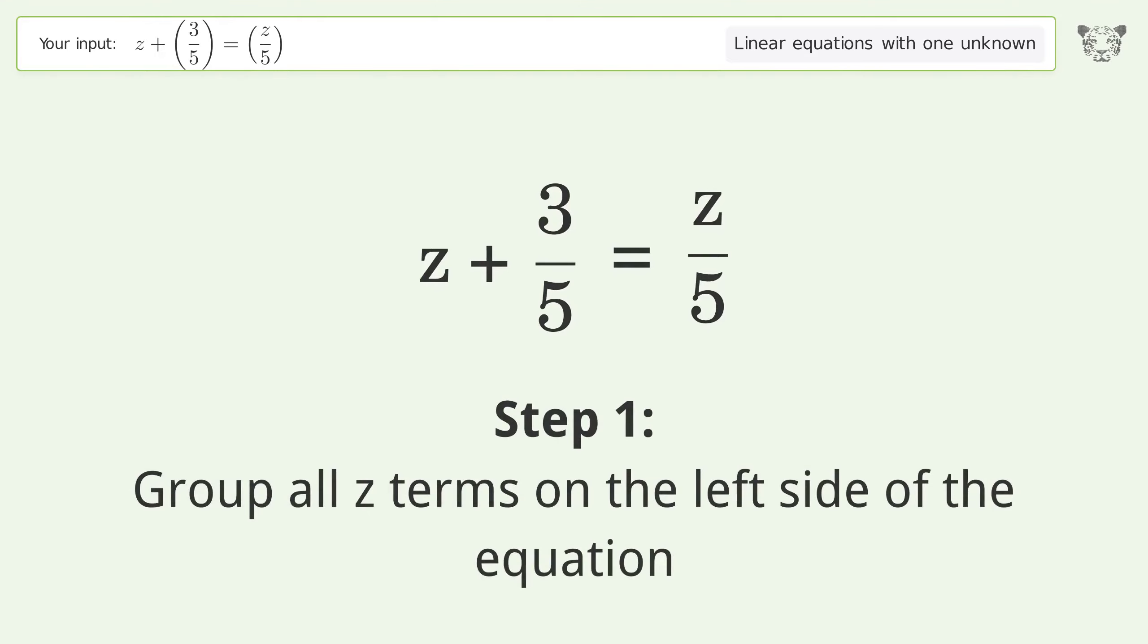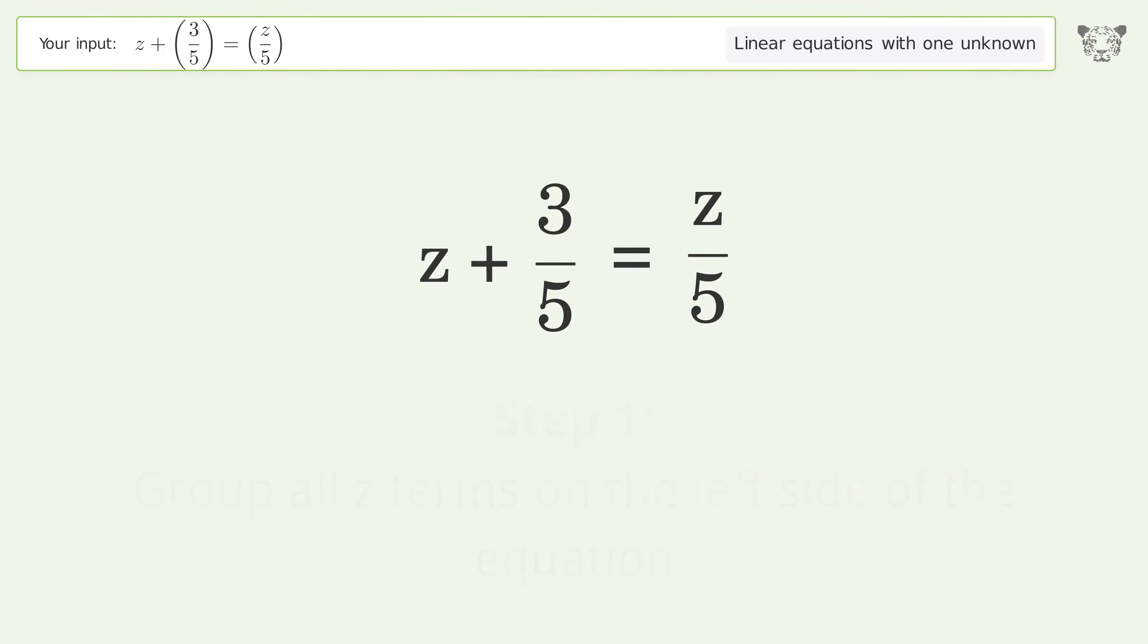Group all z terms on the left side of the equation. Subtract z over 5 from both sides.